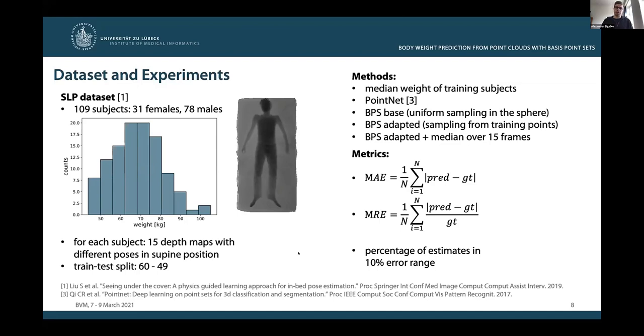For quantitative comparison, we consider three metrics, namely the mean absolute error, the mean relative error, and the percentage of weight estimates within a 10% error range.